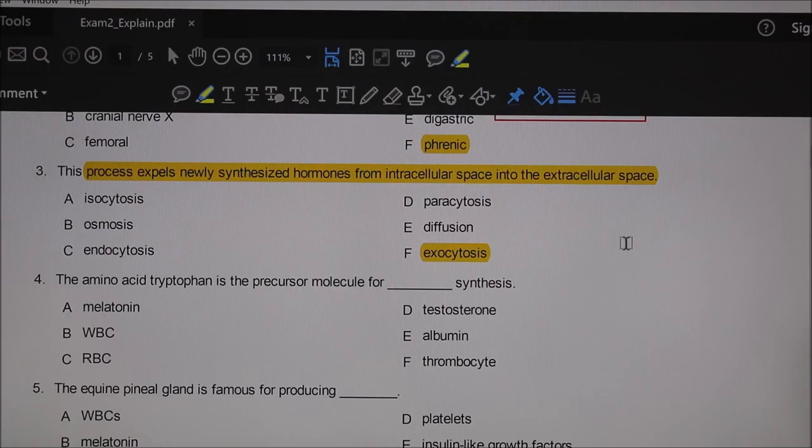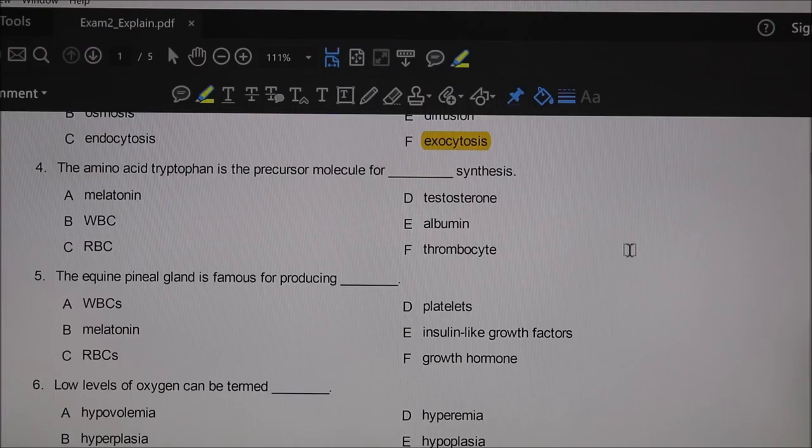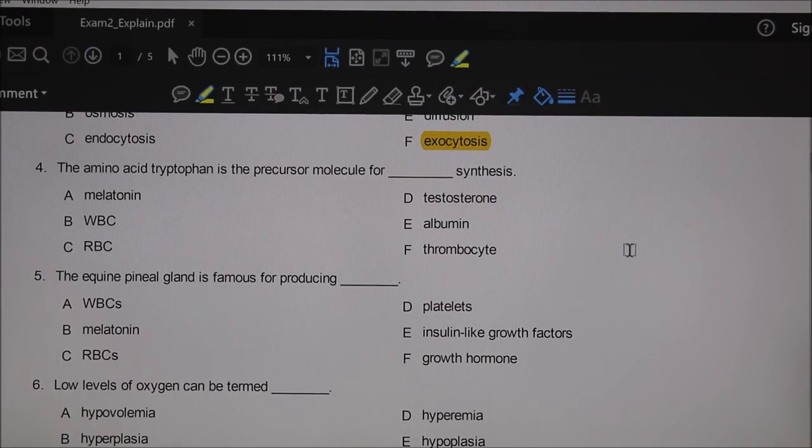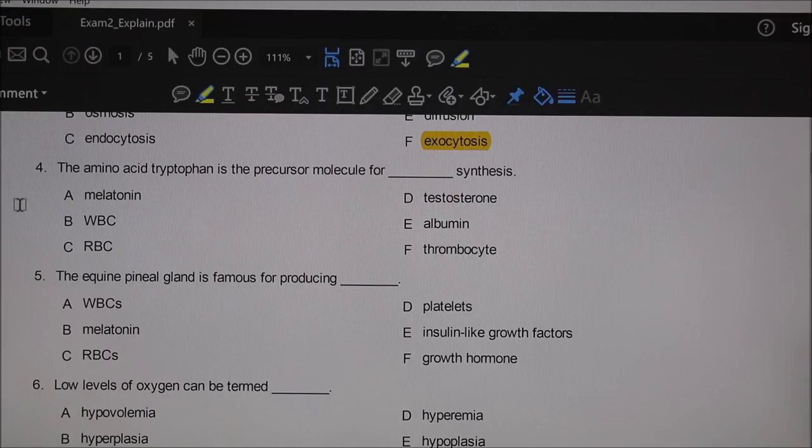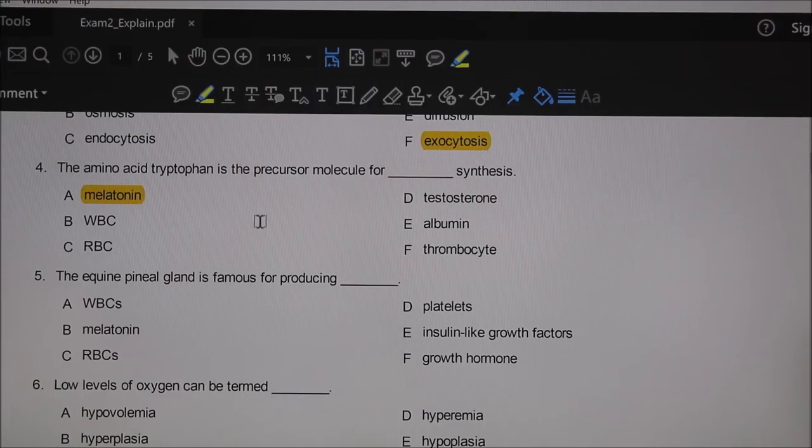In your notes, you could write down: exocytosis is a process that expels newly synthesized hormones from intracellular space into the extracellular space.